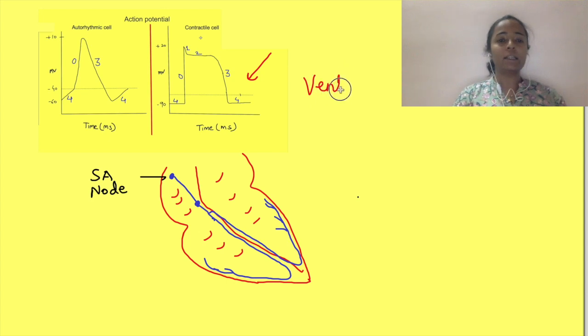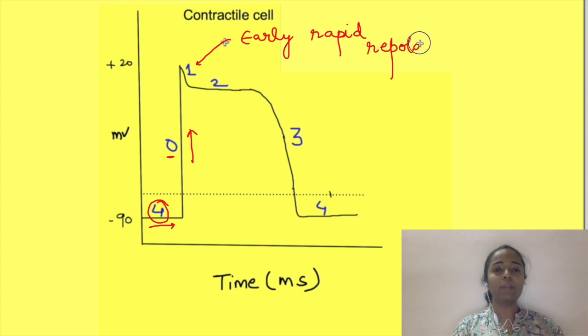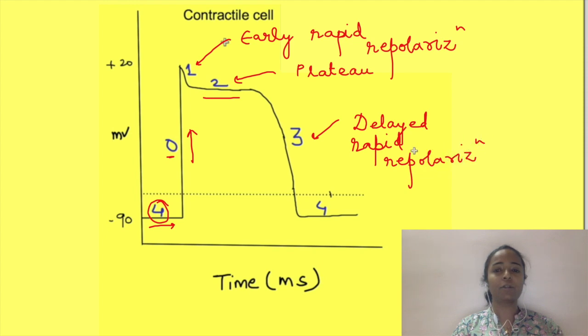In this video, we will see in detail the ventricular action potential. First, let us see the phases of ventricular action potential. The stable resting potential is phase 4. This phase of rapid depolarization is phase 0. This is phase of early rapid repolarization also known as phase 1. This phase is plateau or phase 2 where there is hardly any change in potential. That is why you are getting kind of a straight line here and then there is phase of delayed rapid repolarization or phase 3.